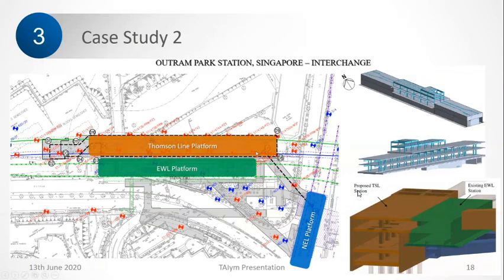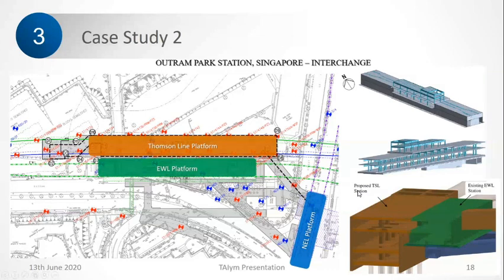These are the platforms of this new line. The purpose of this underpass tunnel was to connect the Thomson Line platform with the NEL platform. For this, an underpass was excavated from here to here. Ideally, because it's a shallow condition, we could do cut and cover, but what was stopping us was the tunnels running here — there are two tunnels, as you can see from the green dotted line, coming to this station platform. So we cannot do cut and cover.